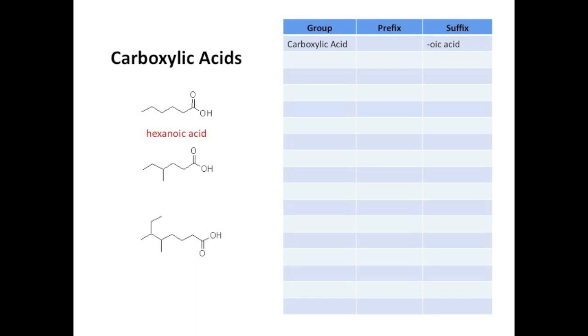This first example here is called hexanoic acid. Now what I'd recommend as you watch this video is to try to name the examples before I get to them. You can pause as you like and that should give you really good practice. Now carboxylic acids as terminal functional groups will be given position 1, which is why you don't need to name the first one 1-hexanoic acid, it's just assumed. This also makes the second example 4-methylhexanoic acid. And finally, the third example is 5,6-dimethyloctanoic acid.